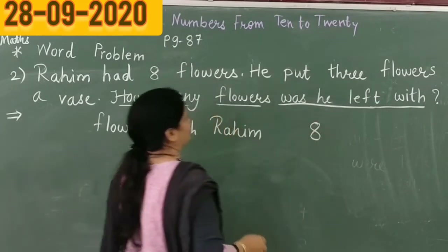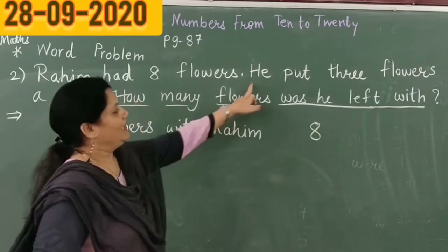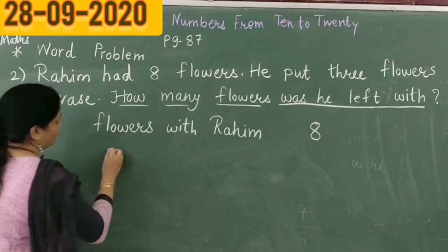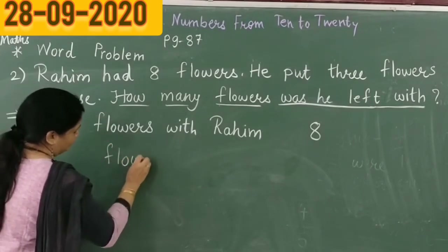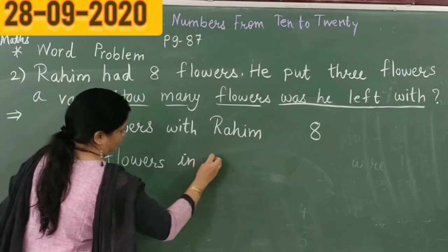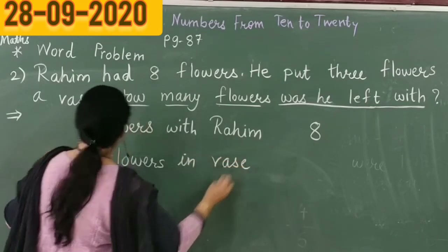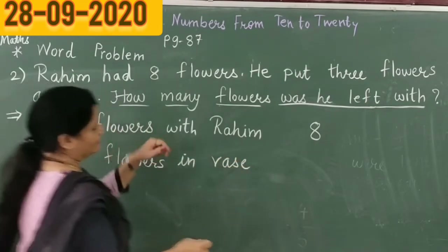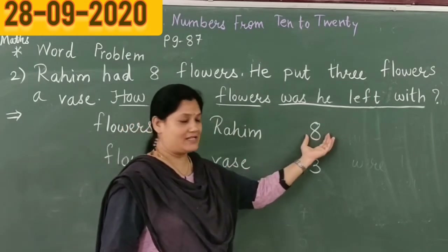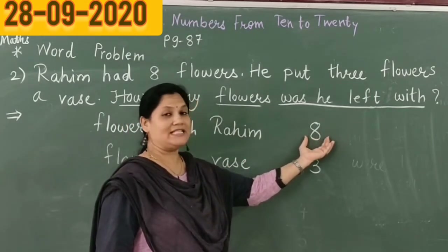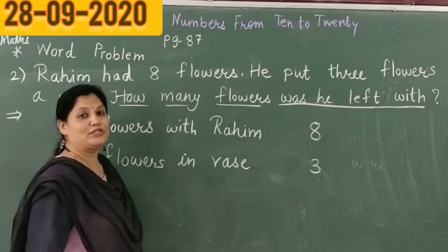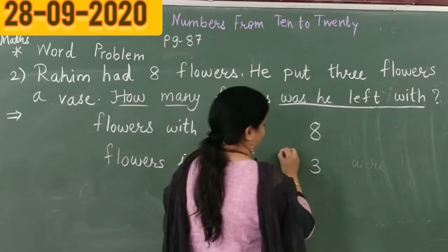So let us write 8 over here. He put 3 flowers in a vase. So flowers in vase are 3. He was having 8, and out of this 8 he put 3 in a vase. So what do we do? We have to subtract.